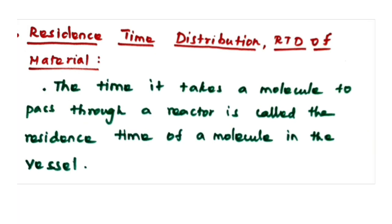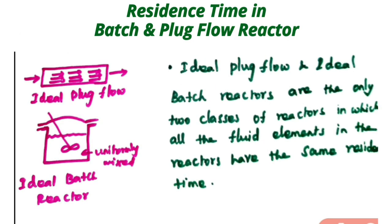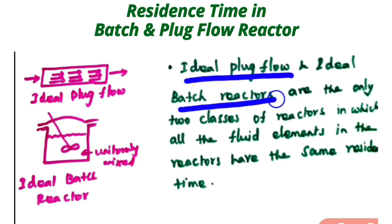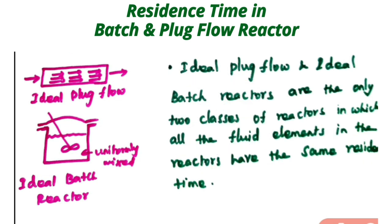The condition of an ideal reactor is that the residence time should be the same for all molecules. Ideal plug flow reactors and ideal batch reactors are the only two classes of reactors in which all the fluid elements in the reactor have the same residence time.